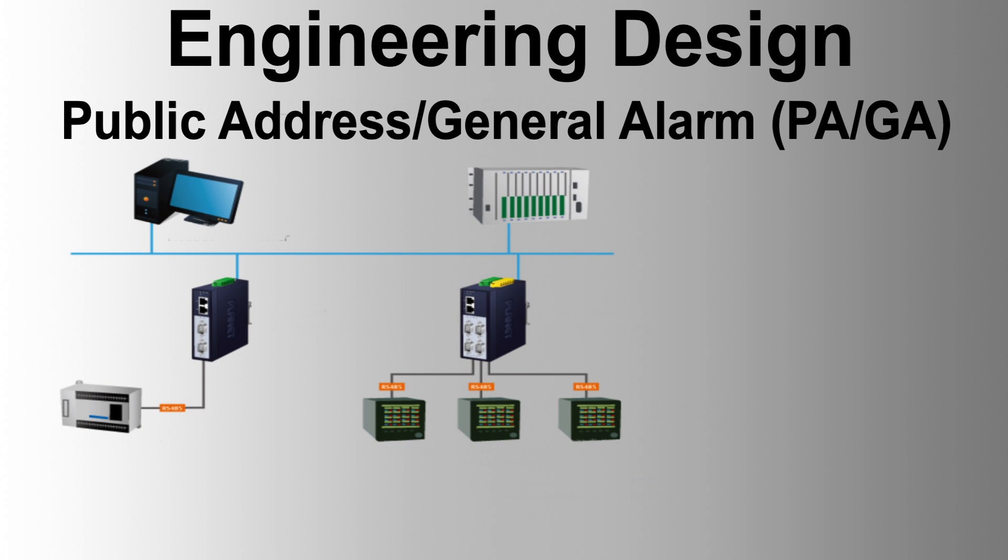PA System primary function: provide facility-wide communications through a reliable network operable during emergencies, using voice, audio, and visual systems. Designed for 24/7 year-round operation at all manned and unmanned locations. Target availability to be confirmed by vendor calculations.